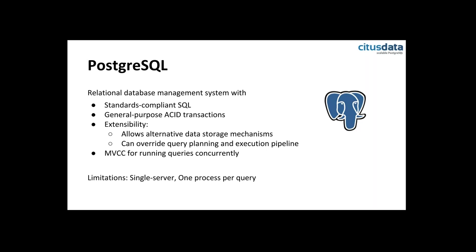There's no locking or synchronization needed between queries, which makes it quite efficient at running many queries concurrently. But an inherent limitation of PostgreSQL — at least the current version — is that it only uses one process per query. It's also limited to a single server. You can set up replication, but then you just get two copies of the same database and still only use one process when running a query.